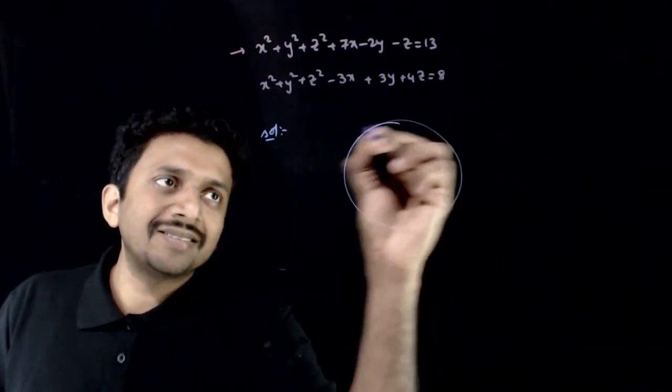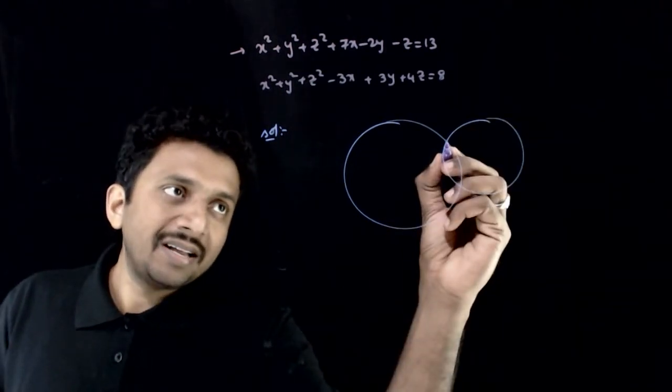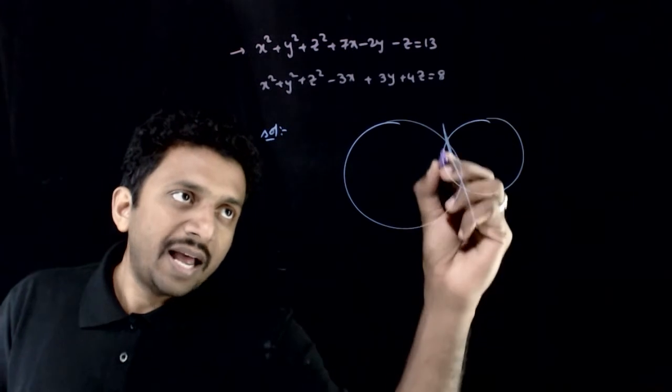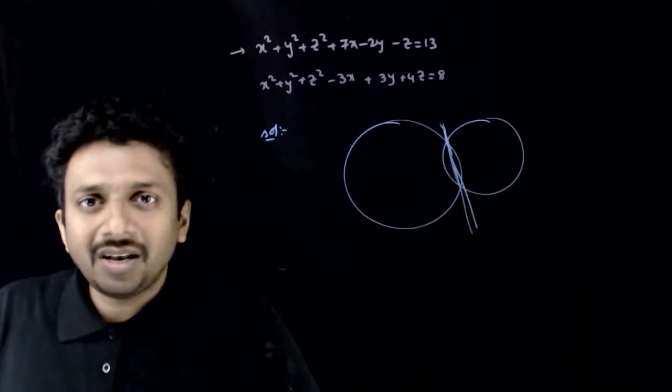If you have the first sphere like this, and the second sphere like this, they intersect on a circular cross section, and you are asked to find the plane which has the same cross-sectional intersection.